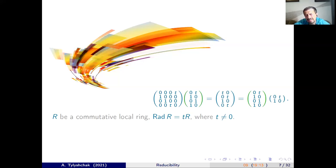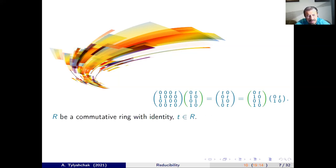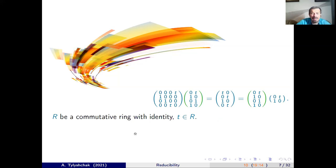We check these products, find the two columns, and show that the matrix M with two elements T is reducible. Moreover, this result holds not only for the commutative local ring with principal Jacobson radical generated by element T, but also for any commutative ring with identity and for any element T from ring R.